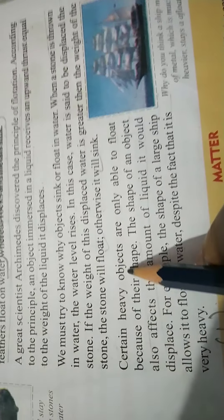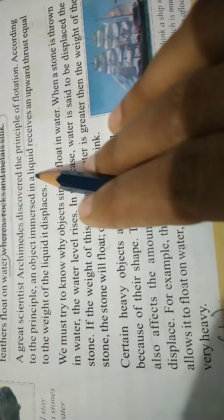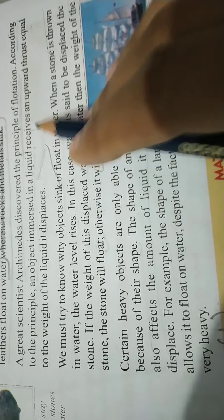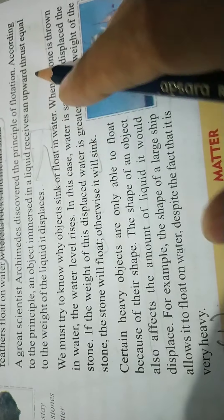The shape of a large ship allows it to float on water despite the fact that it is very heavy. If the water displaced by the ship is more than its weight, then the ship will float.